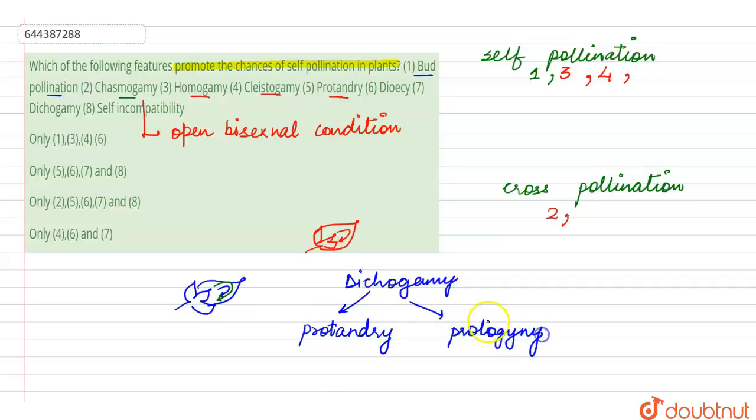And in the second one it is called protogamy, when the female parts mature first. So if the male matures first, the female is still not mature to receive the pollen grain, so there will be incompatibility between the pollen release and the stigma receptivity.